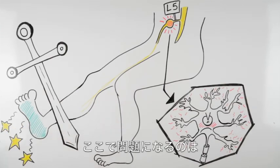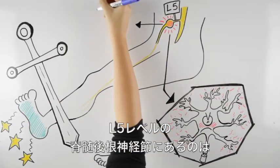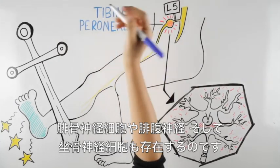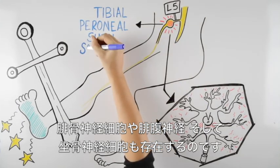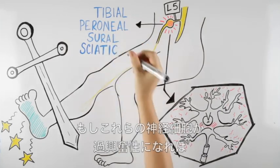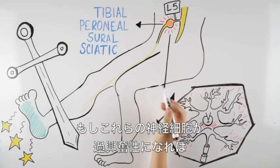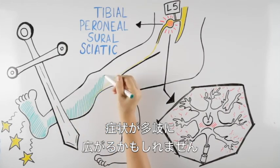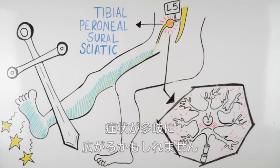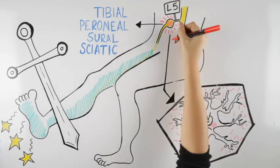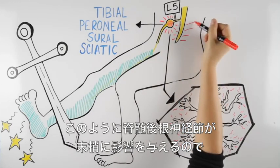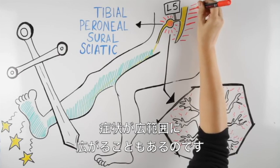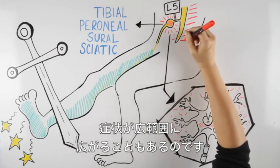The issue is that we do not only have tibial neurons within the L5 dorsal root ganglia, but there are also neurons from the peroneal, sural, and sciatic nerve travelling through this ganglion. If these neurons become hyperexcitable, it may well lead to spread of symptoms well outside the affected tibial nerve territory. As such, widespread symptoms may be attributed to peripheral mechanisms, as the dorsal root ganglia are still part of the peripheral nervous system.